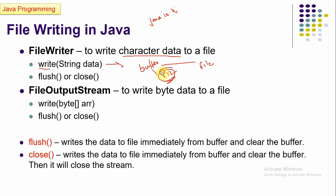If I cannot wait for up to 512 characters — for example, if I write only 5 characters and want them written to the file immediately — there is a flush() function you can call. The flush() method writes the data to the file immediately from the buffer and clears the buffer, so it won't wait until 512 characters are accumulated.